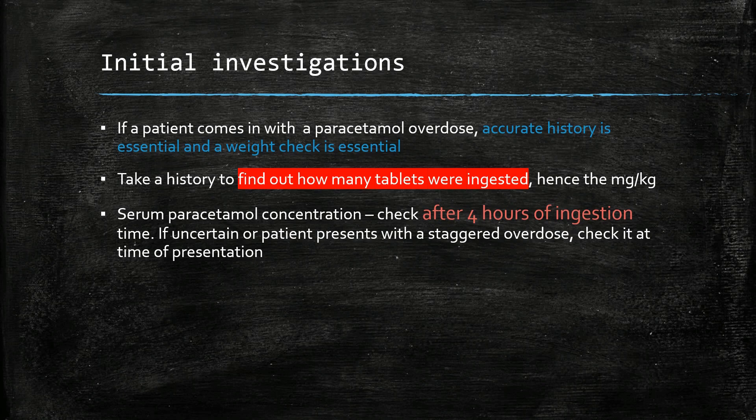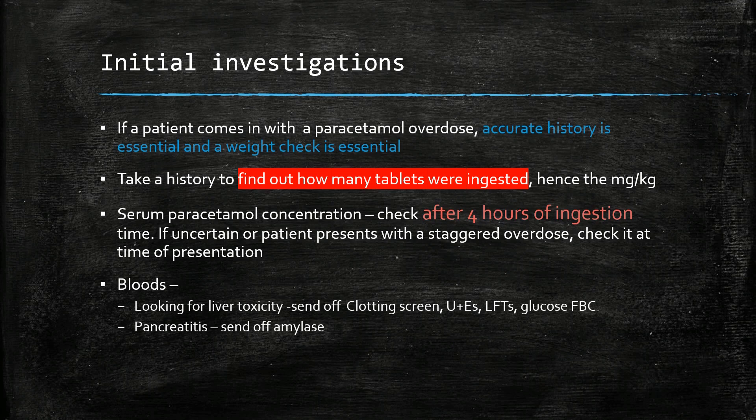Paracetamol concentration should be checked after 4 hours of suspected ingestion. If we are uncertain regarding the time of the overdose, or the patient has taken a staggered overdose, then check the paracetamol levels immediately. Bloods should be sent off, particularly looking for hints of liver toxicity and also pancreatitis, which is associated with paracetamol overdose. Carry out an ABG and an ECG.